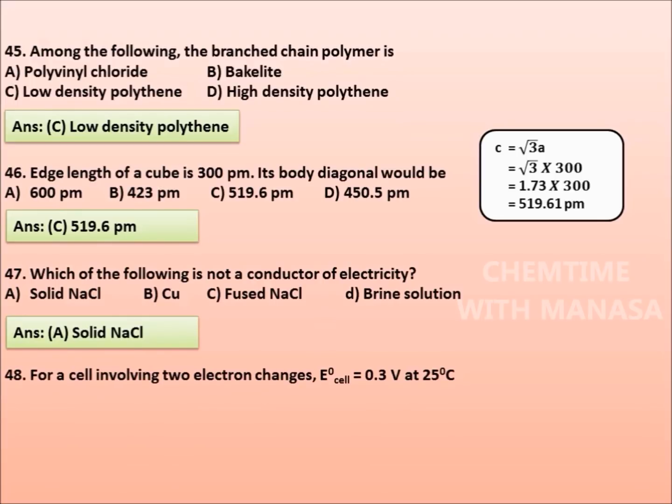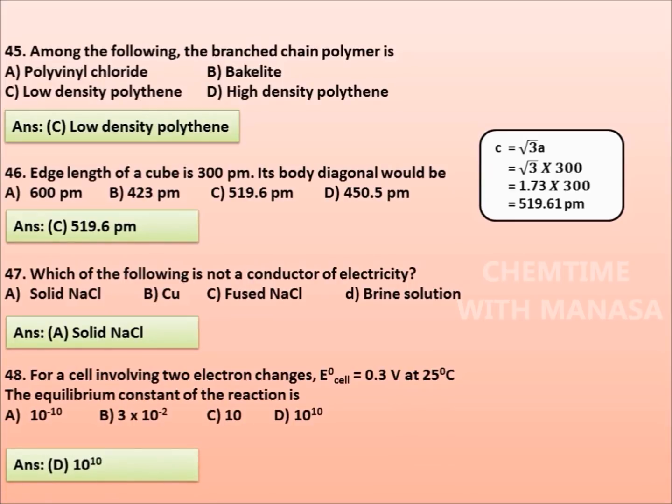Question 48: For a cell involving two electron changes, standard cell potential E0 cell is equal to 0.3 volt at 25 degrees Celsius. The equilibrium constant of the reaction is 10 to the power of minus 10, 3 into 10 to the power of minus 2, 10, or 10 to the power of 10. Answer is option D, 10 to the power of 10.